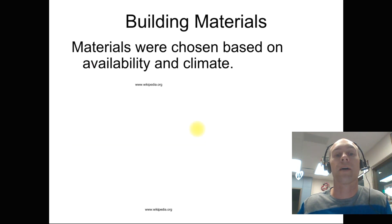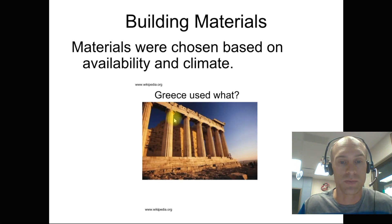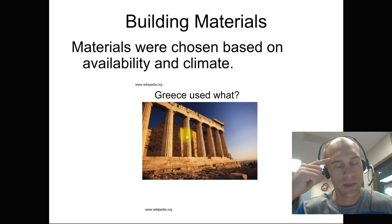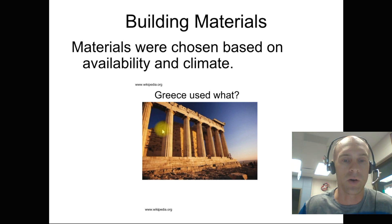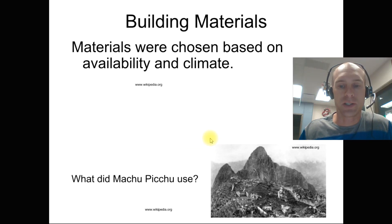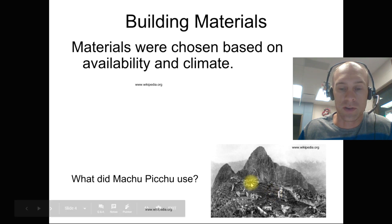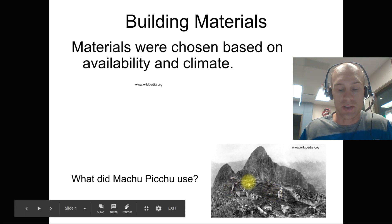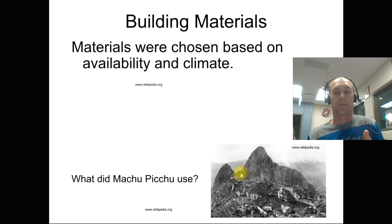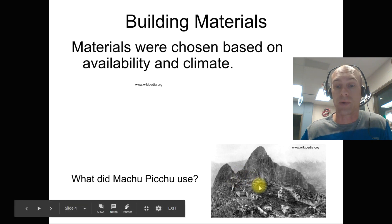Building materials were chosen based on availability and climate. In Greece, they used marble and stone — that's what they had around them. At Machu Picchu, built on a mountainside, they used stone cut out of the mountain. They actually had dry-cut stones, meaning they didn't use mortar or mud or anything like that, mostly because it's mostly rock.